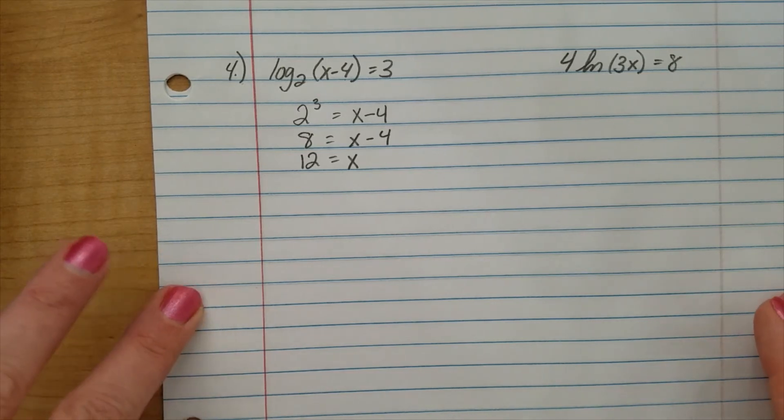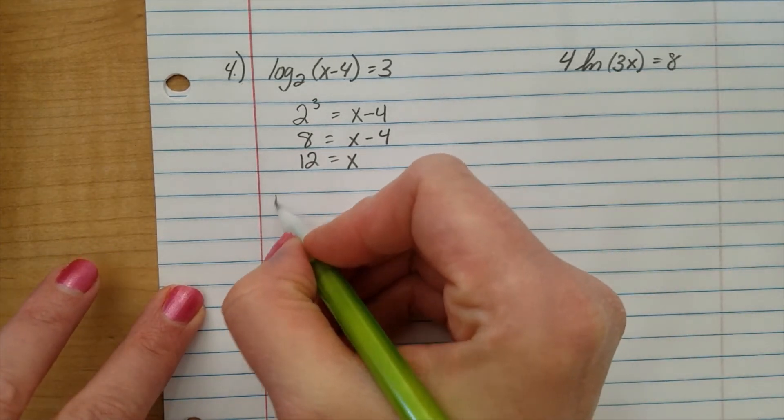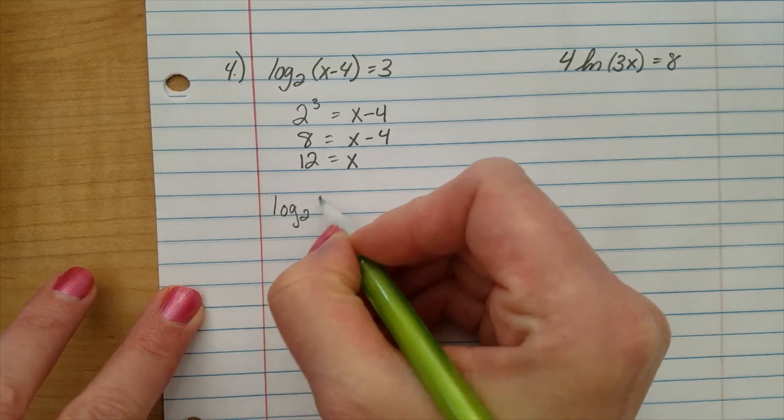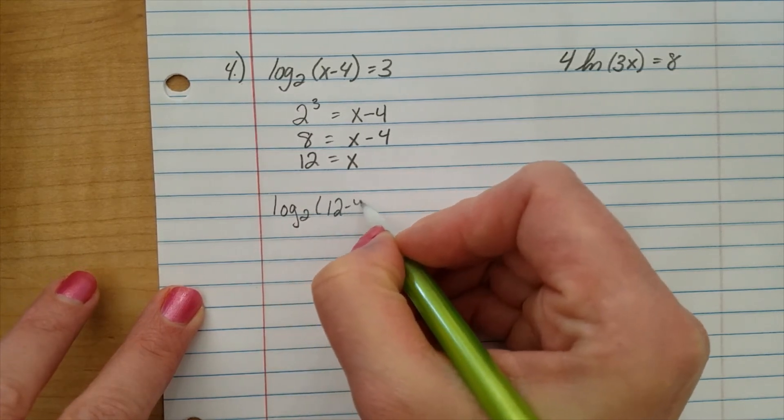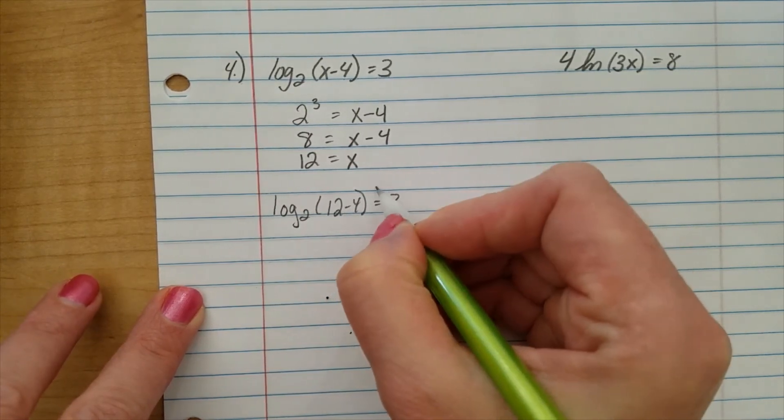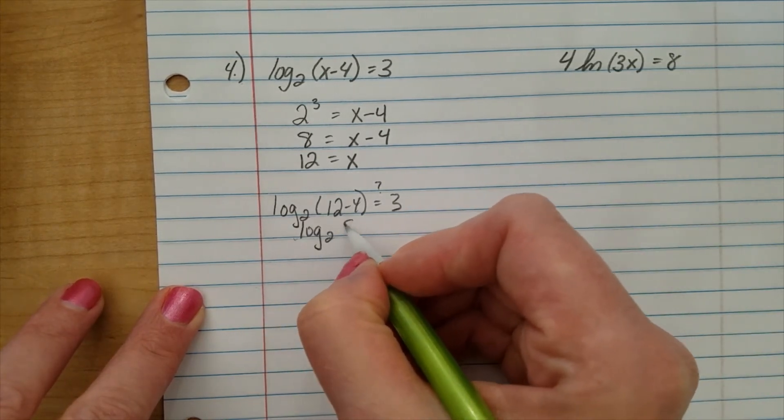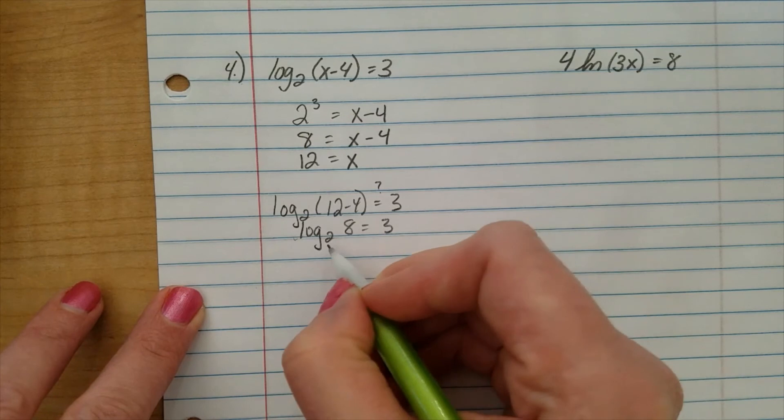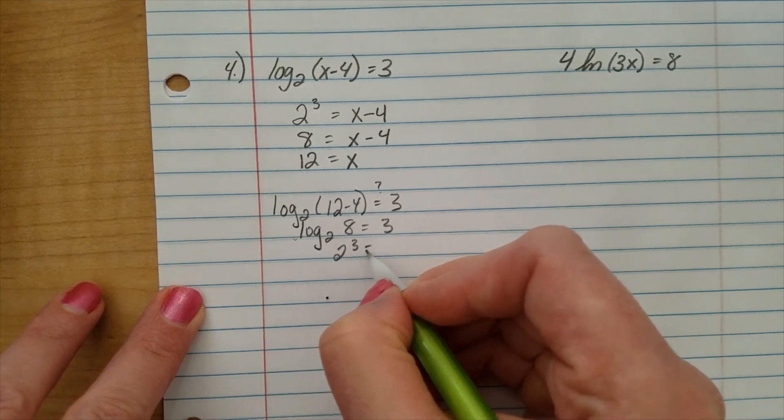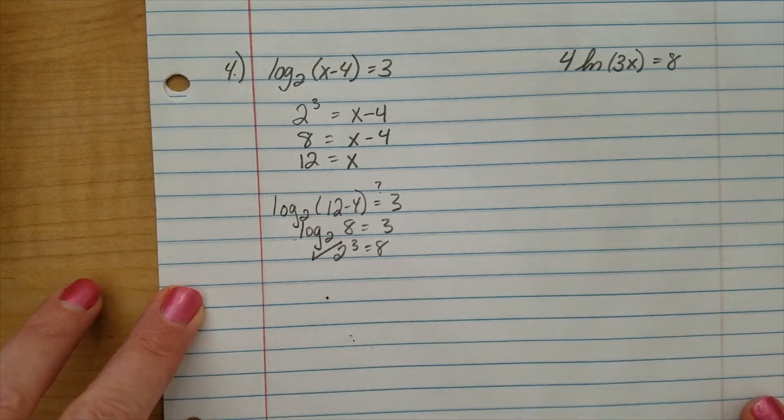Now, let's check to make sure we are correct. Log base 2 of 12 minus 4. Does that equal 3? Log base 2 of 8. Well, that would be 2 to the third equals 8. We're good.